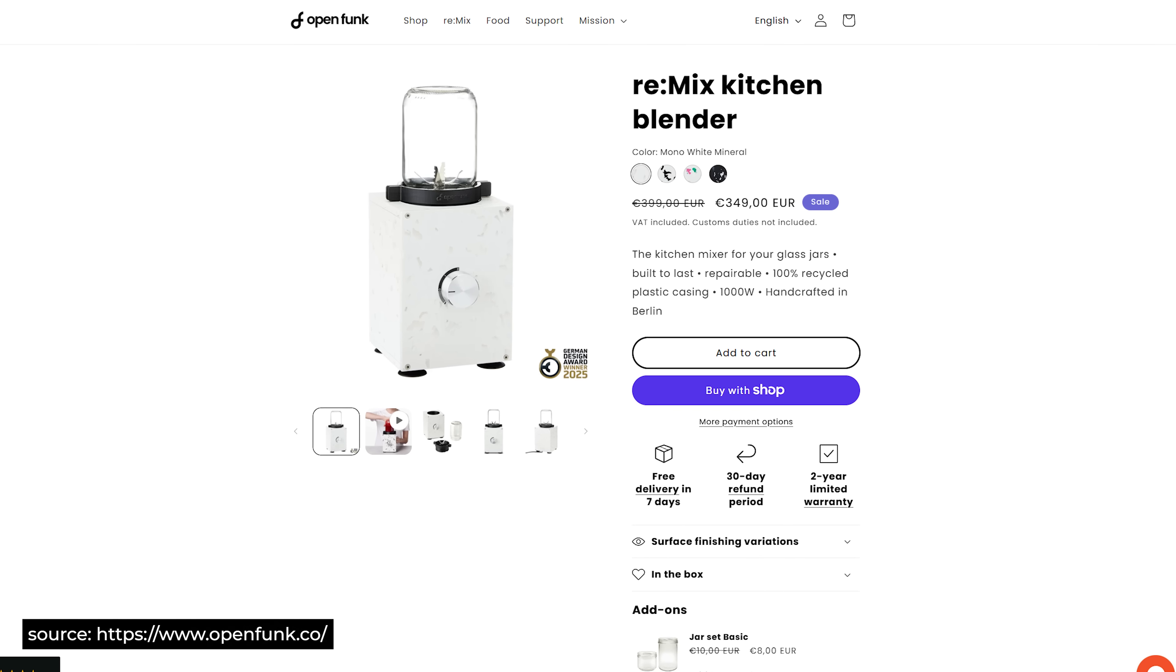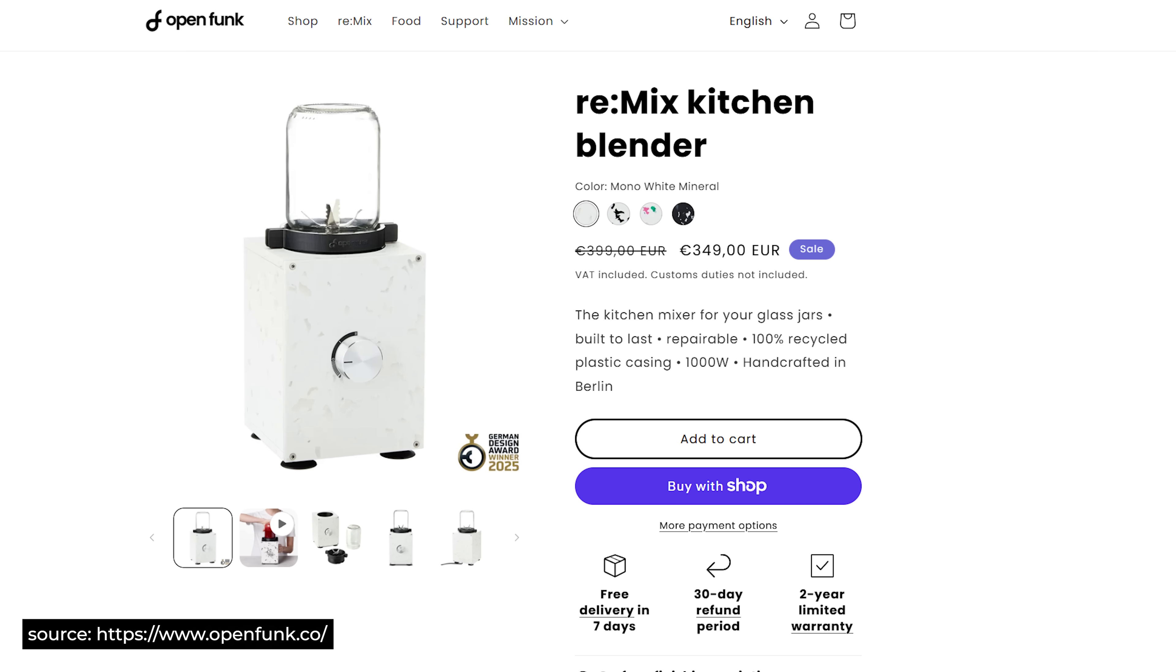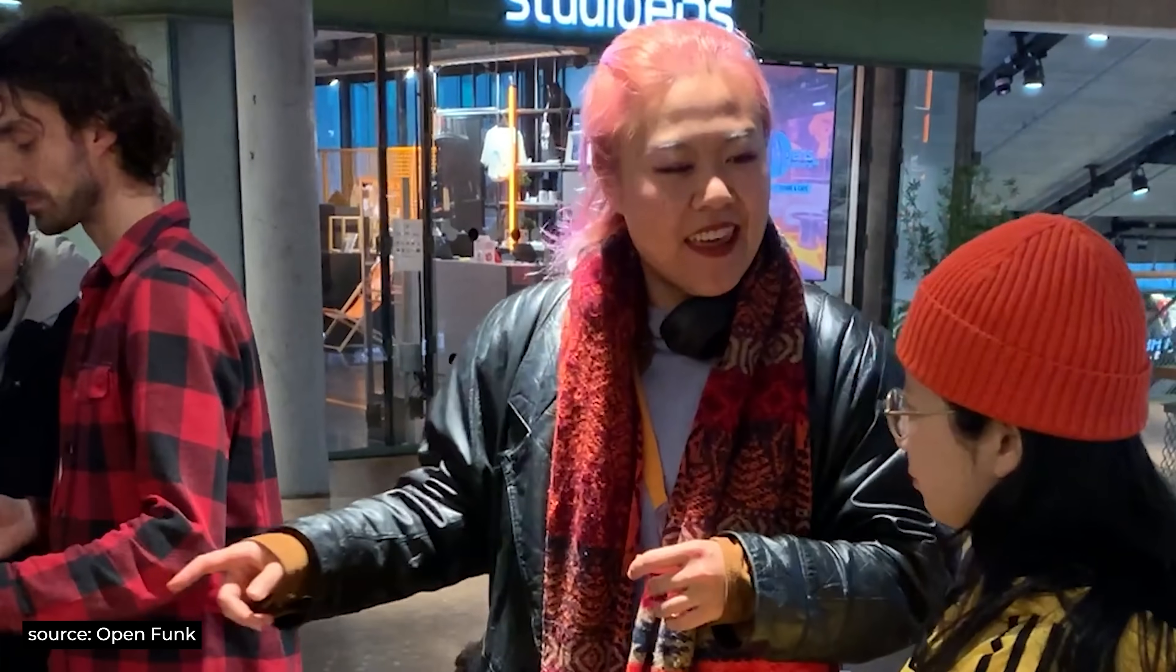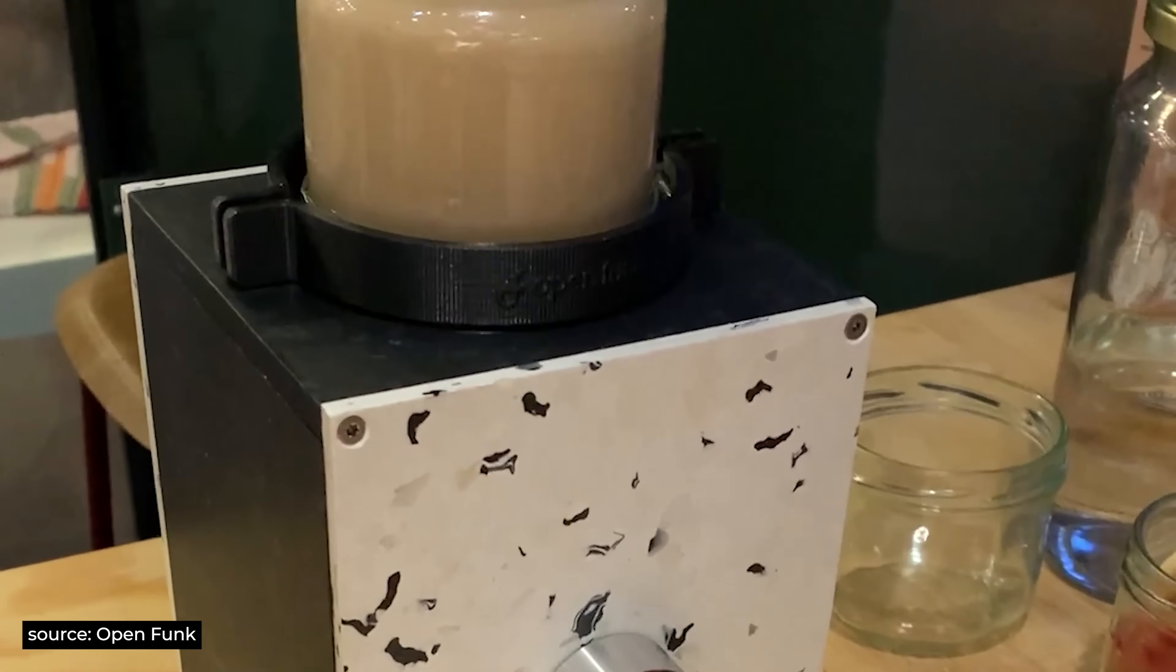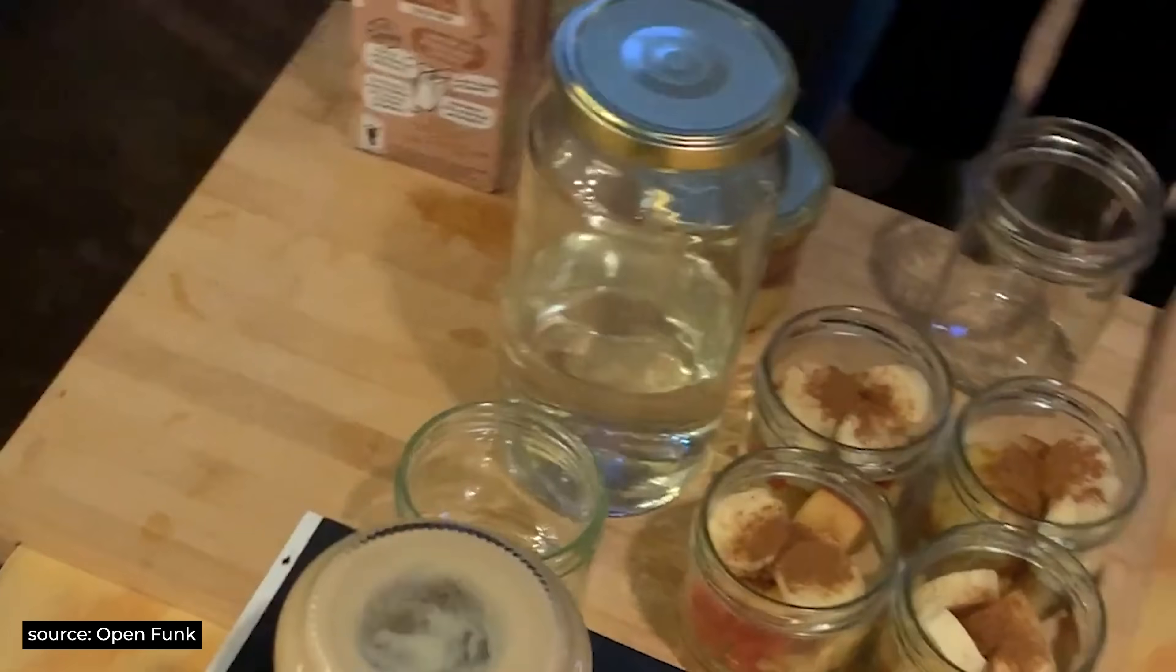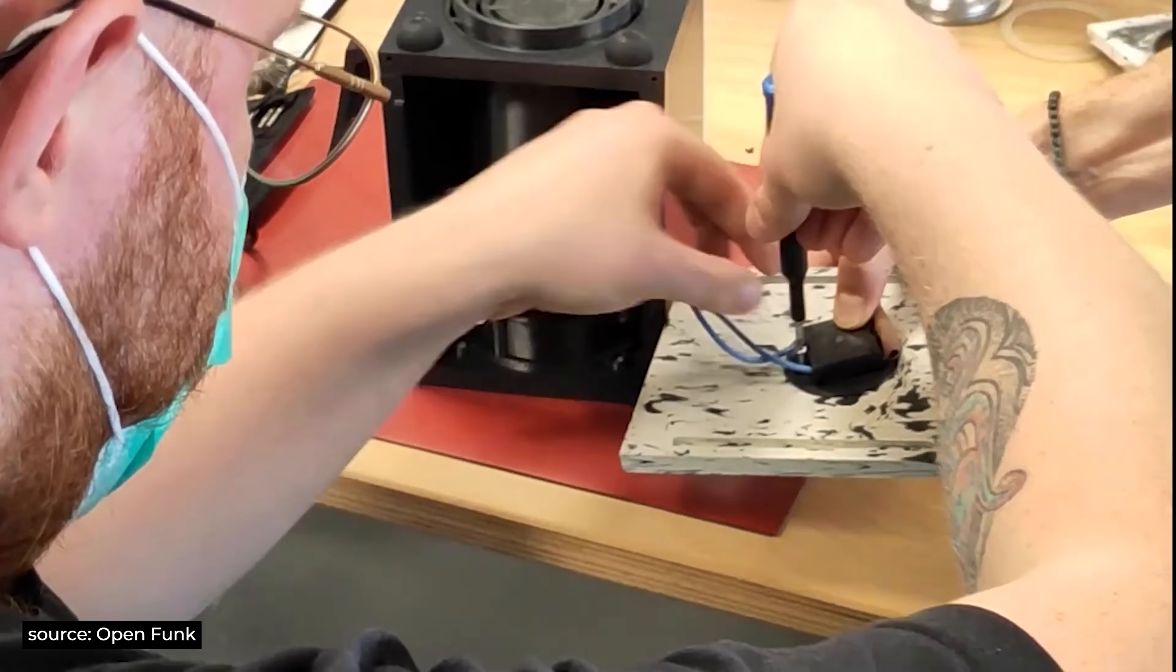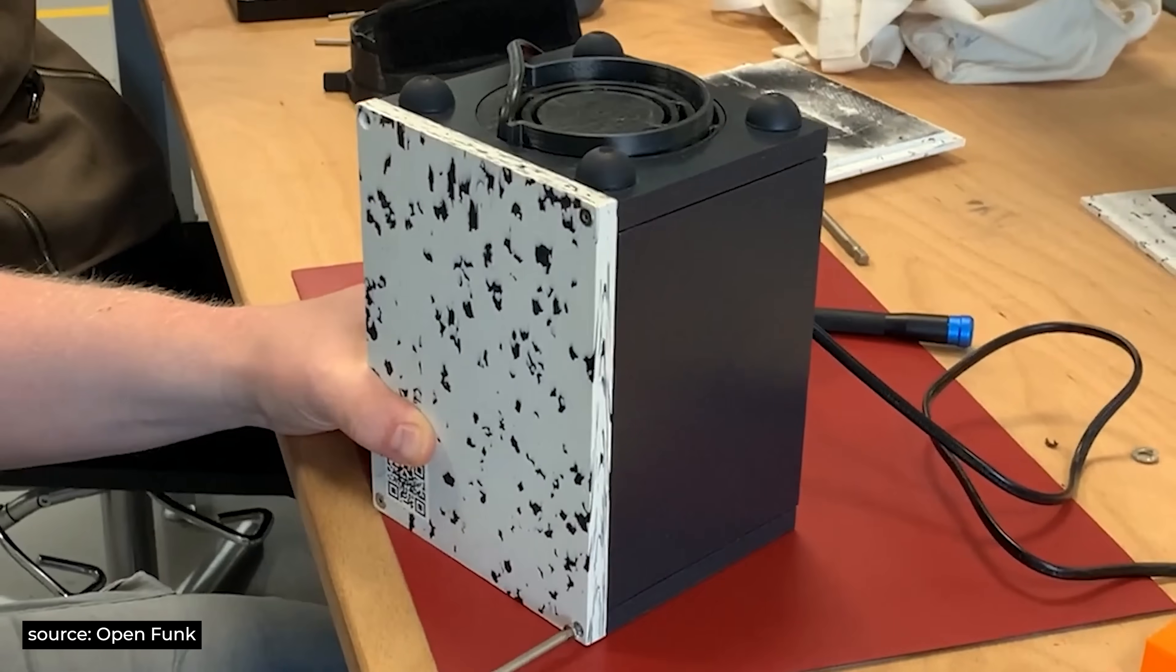For a start, over £300 for a blender is hardly an inclusive price. For circular products to truly have an impact, they must be accessible to everyone, not just eco-conscious consumers with money to spend. Hopefully this is something that will come with time and scale, and this is something the founders say will require close collaboration with their suppliers.